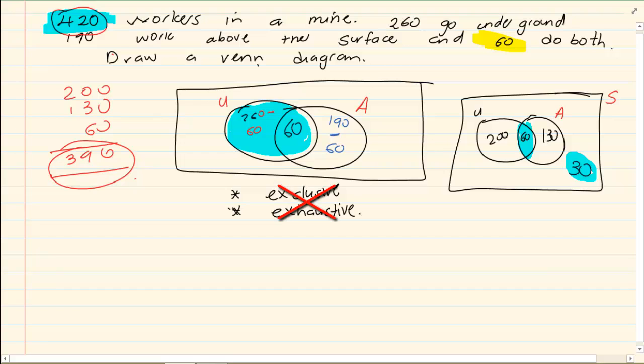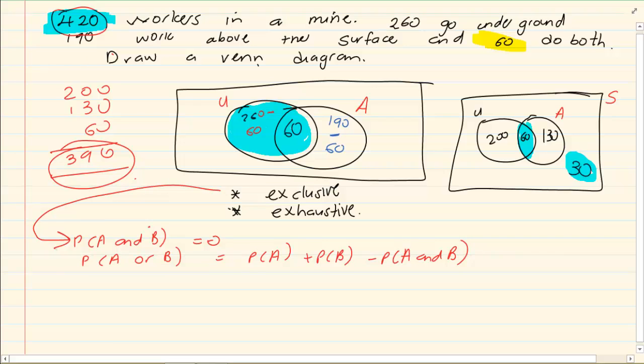Now in the exams, if they tell you prove that this is exclusive, then you would say, okay, wait to be exclusive, then I have to have that P of A and P of B must equal to 0. Okay. Now I have got P of A or B is equal to P of A plus P of B minus P of A and B. For it to be exclusive, I must prove that P of A and B is equal to 0.